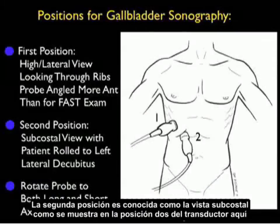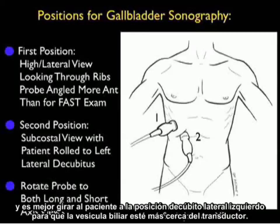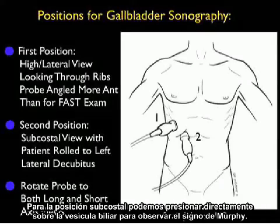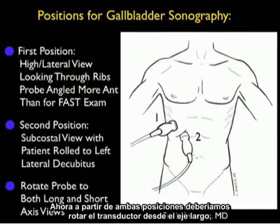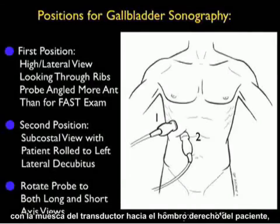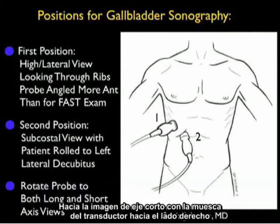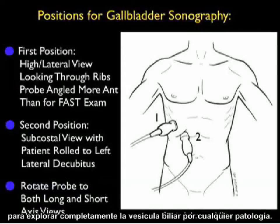The second position is known as the subcostal view. It's best to roll the patient into the left lateral decubitus position so that the gallbladder is closer to the probe. From the subcostal position we can push down directly on the gallbladder to elicit the sonographic Murphy's sign. From both positions, we should rotate the probe from long axis with the probe marker towards the patient's right shoulder to the short axis configuration to completely inspect the gallbladder for any pathology.